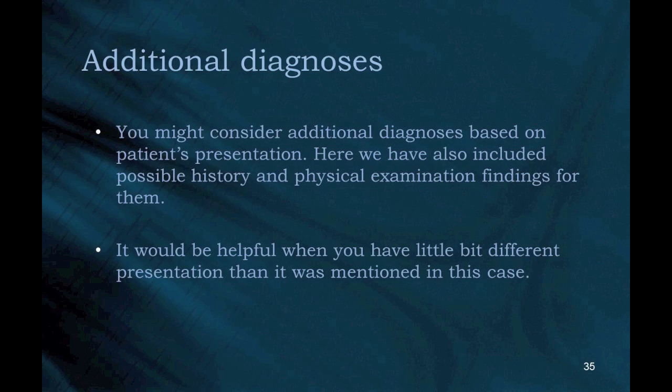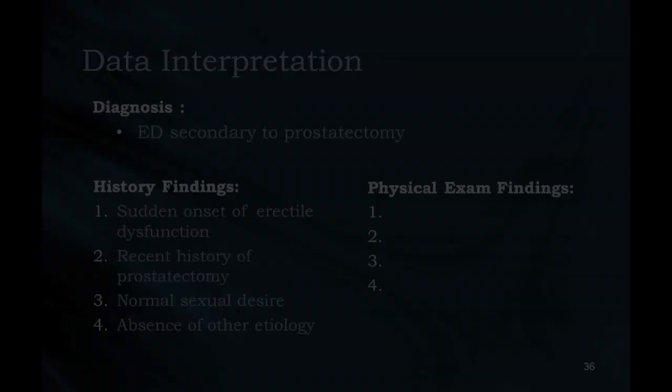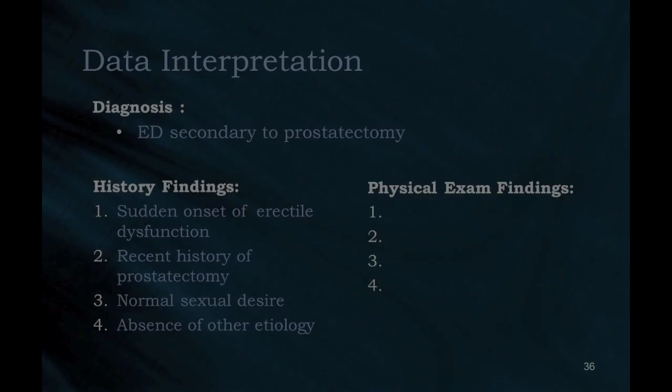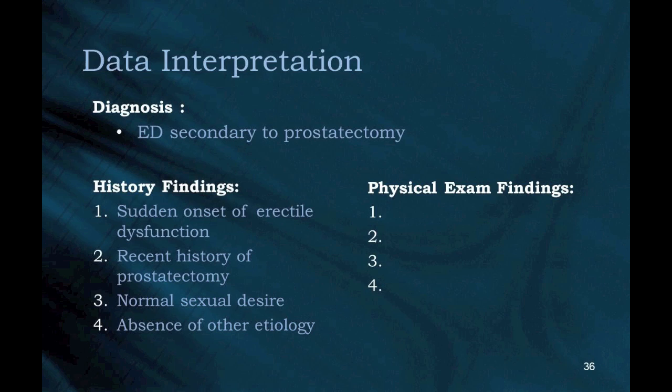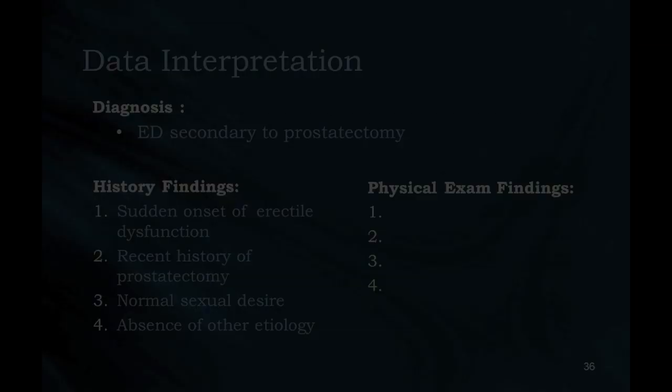Additional diagnoses: You might consider additional diagnoses based on the patient's presentation. Here we have also included possible history and physical examination findings for them — it would be helpful when you have a slightly different presentation than mentioned in this case. Diagnosis: Erectile dysfunction secondary to prostatectomy. History findings: (1) Sudden onset of erectile dysfunction; (2) Recent history of prostatectomy; (3) Normal sexual desire; (4) Absence of other etiology.